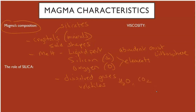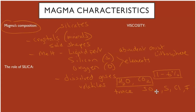We've got CO2, and we have some trace gases like SO2, maybe some sulfur, maybe some chloride, maybe some fluoride as well. Those are the principal ones. Gases can range from one to six percent in terms of the weight of the magma. So that's the composition.